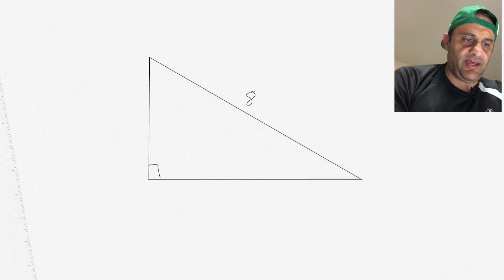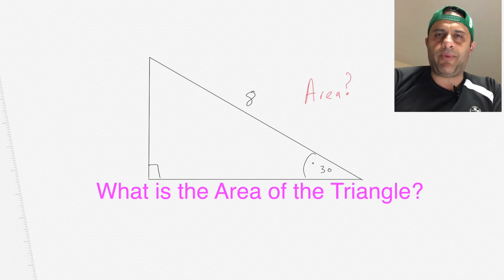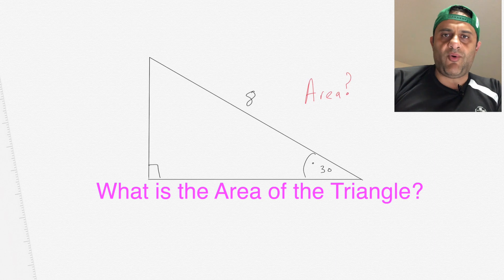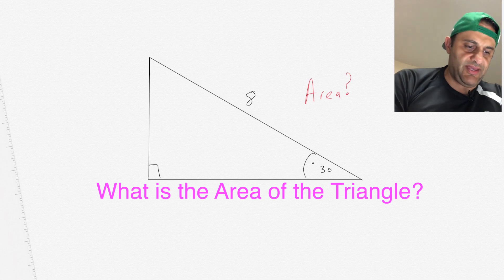I have a student who asked me about 30-60-90 triangles, and I could see how that could be a little difficult. So let's do this the way they ask. Let's say the hypotenuse is 8 on this 30-60-90 triangle, this angle here is 30, and they're asking for the area of this triangle.